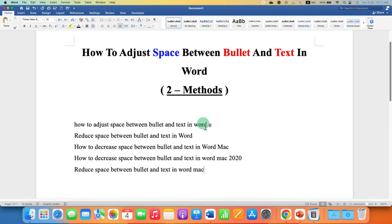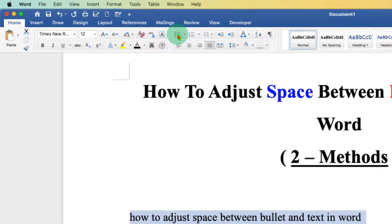First, you need to just add the text for the bullet points. Then, select the text and give the bullet points.